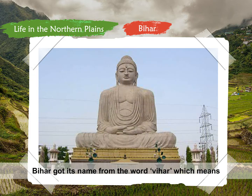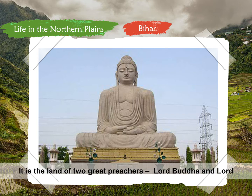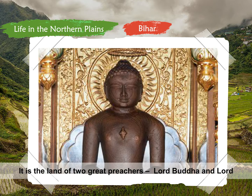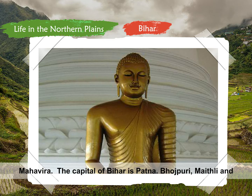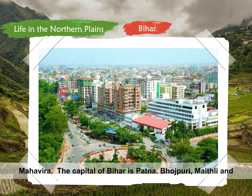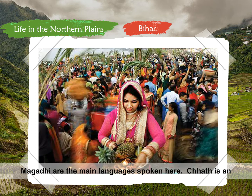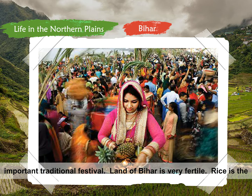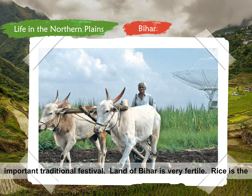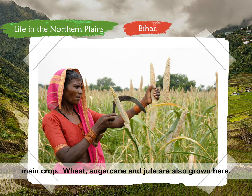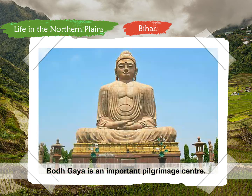Bihar got its name from the word Vihar, which means Buddhist Monastery. It is the land of two great preachers, Lord Buddha and Lord Mahavira. The capital of Bihar is Patna. Bhojpuri, Maithili, and Magadhi are the main languages spoken here. Chhath is an important traditional festival. The land of Bihar is very fertile. Rice is the main crop. Wheat, sugarcane, and jute are also grown here. Bodh Gaya is an important pilgrimage center.